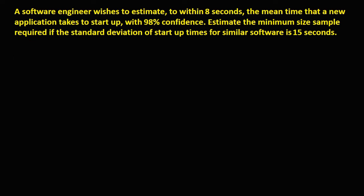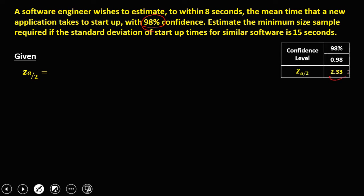For this problem: a software engineer wishes to estimate, to within 8 seconds, the mean time a new application takes to start up, with 98% confidence. Estimate the minimum sample size required if the standard deviation of the startup times for similar software is 15 seconds. For the confidence coefficient, since we have a 98% confidence level, the confidence coefficient is 2.33. The margin of error, since within 8 seconds, is 8. The population standard deviation is 15 seconds.